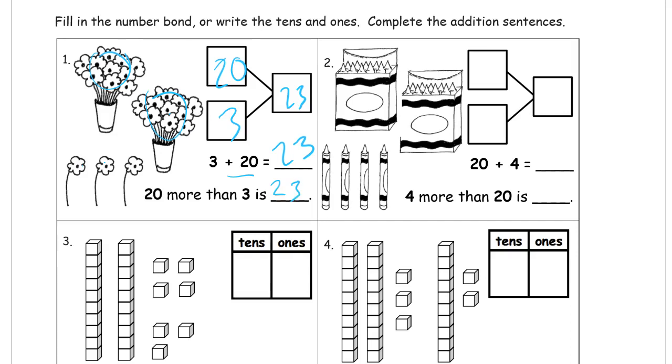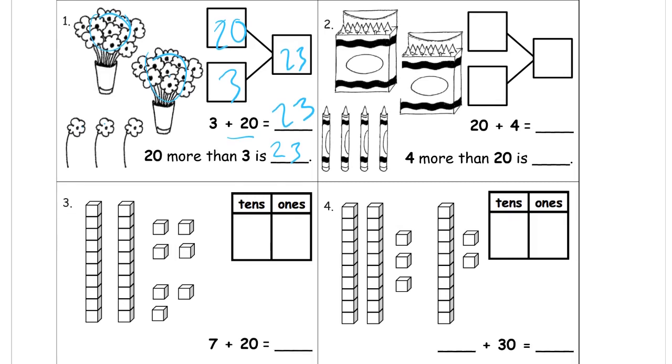Now we have crayons. Two groups of ten, that's ten, twenty. Just like it says here in the addition equation. And then we have one, two, three, four single crayons. Twenty plus four equals twenty-four. Four more than twenty is twenty-four.